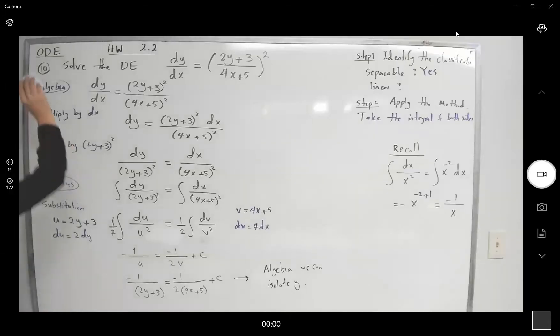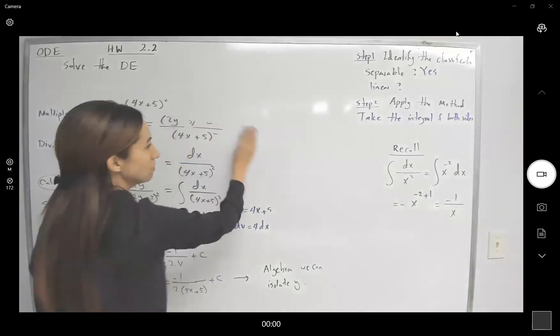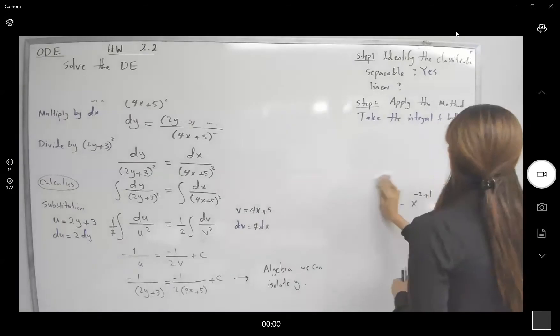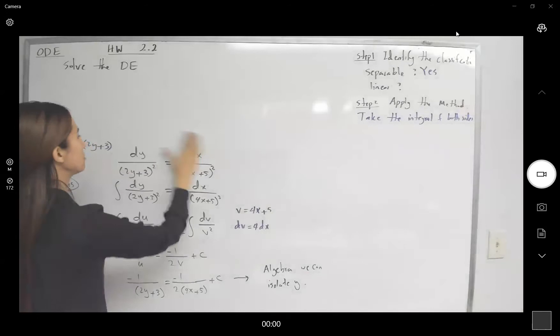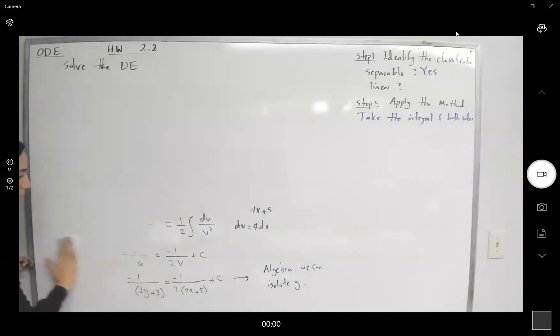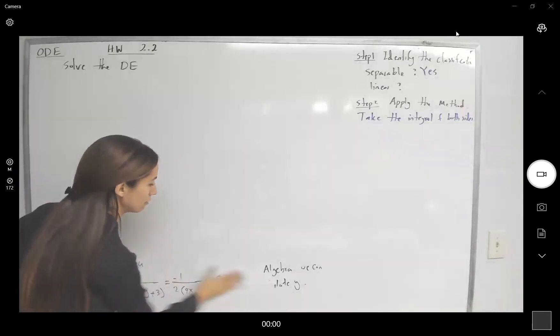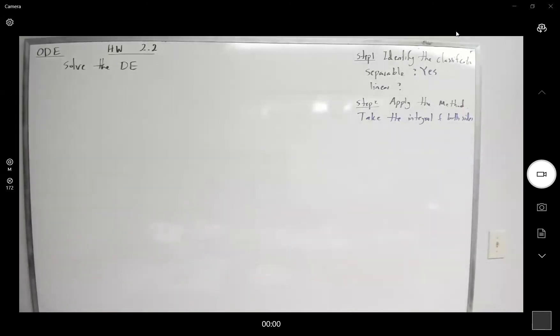Let's take a look at question 15. Question 15 asks us to solve the following differential equation: ds over dr is equal to ks.